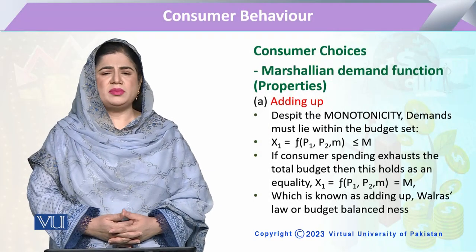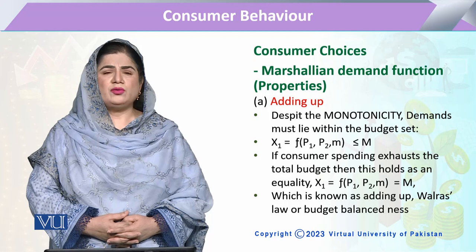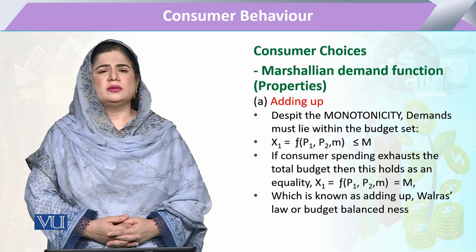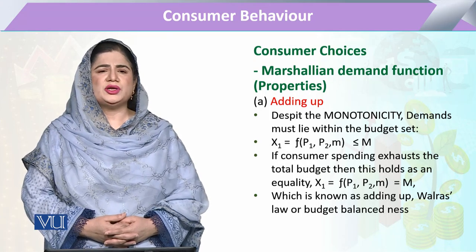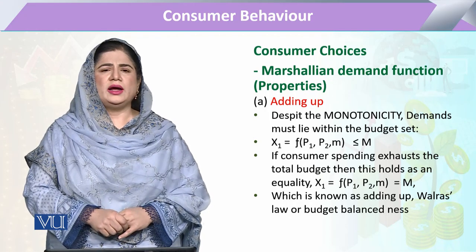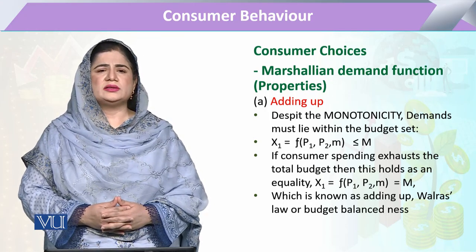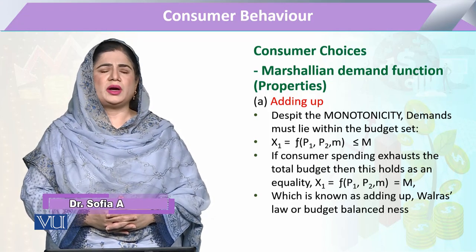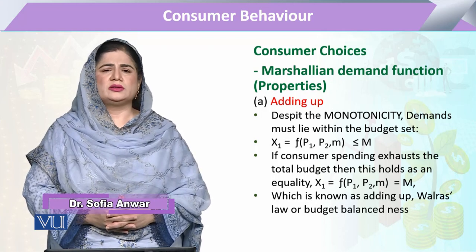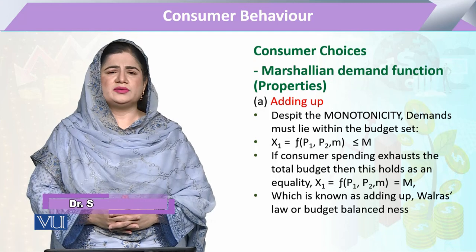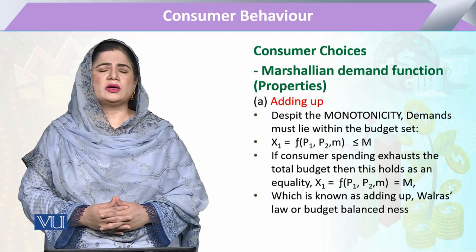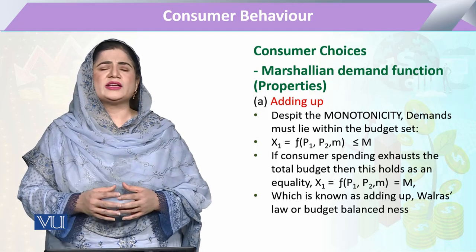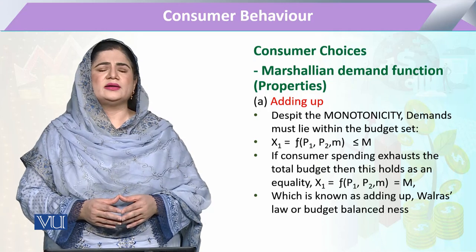Today's topic is the Marshallian Demand Function and its properties. Marshallian Demand tells us the relationship between the quantity demanded and its price, and it states that there is always a negative relationship between price and quantity demanded. Here, the consumer derives utility not directly through consumption, but rather through the expenditure that he incurs on consumption.